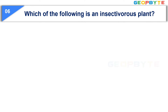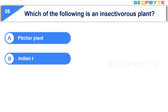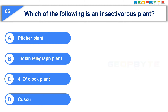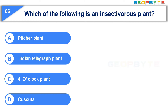Now let us see the sixth question: Which of the following is an insectivorous plant? Option A: Pitcher plant. Option B: Indian telegraph plant. Option C: 4 o'clock plant. Option D: Cuscuta. Your time starts now. Your time is up and the correct answer is Option A: Pitcher plant.